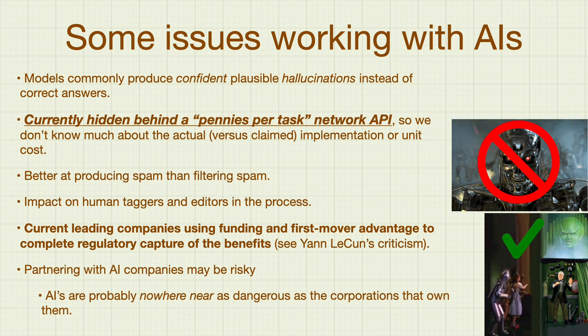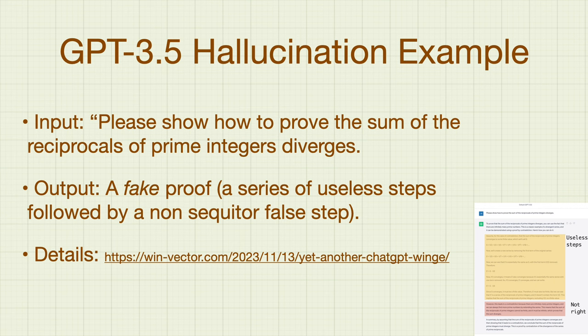The other big issue with these AIs is called hallucination — when the AI builds a very confident wrong answer. I have on the WinVector blog a ChatGPT-3.5 hallucination: I said 'please show how to prove the sum of the reciprocals of prime integers diverges,' and it essentially built a fake proof — not just a wrong proof, but a bunch of irrelevant statements followed by a wrong statement, and then a beautiful introduction and outro. Without covering it carefully, it was literally hard to determine it was wrong, though it's very wrong, and it's not even related to any of the known proofs of this result.